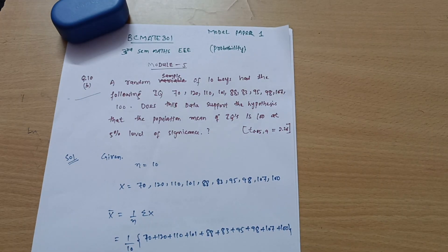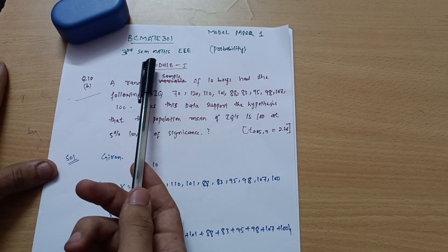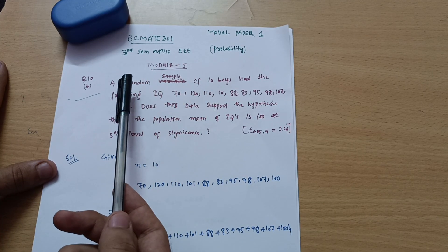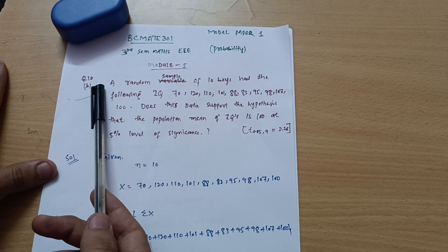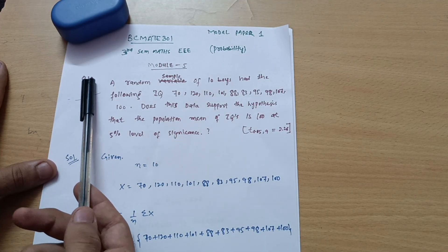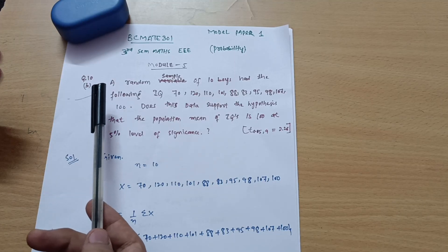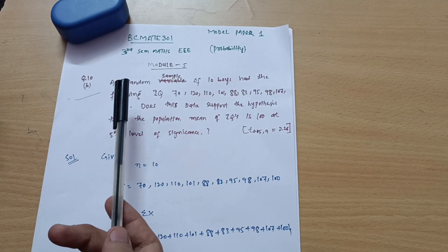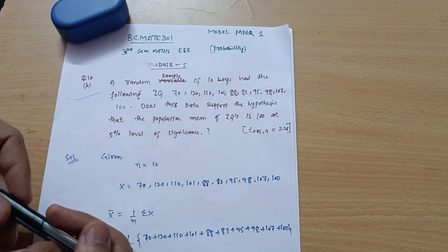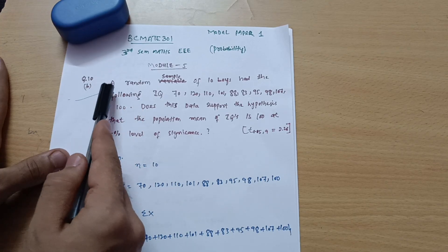Hello, my dear friends, welcome back to my channel. I hope you are all doing well and your preparation is going well. This is model question paper one for the Triple E third semester students, Mathematics subject. Today I will be explaining a question from the probability chapter, model question number 10b. As question number 10a is the theoretical part, I hope you have covered that theory, as the purpose is to train students to cover the theoretical portions.